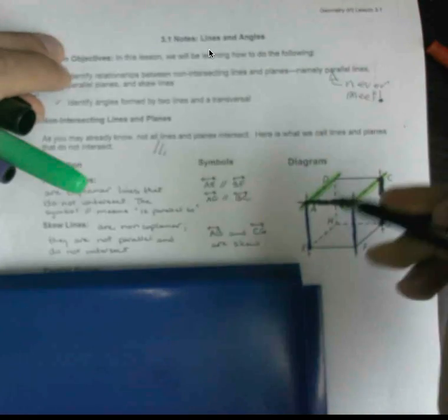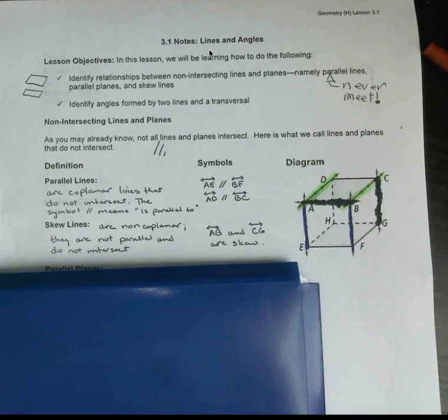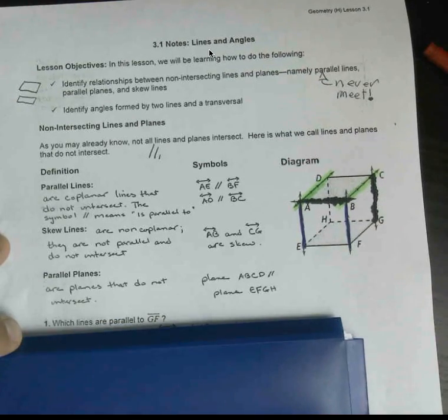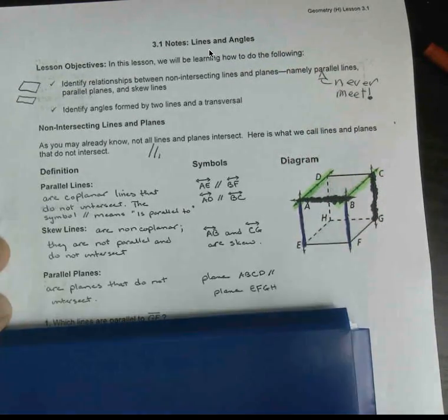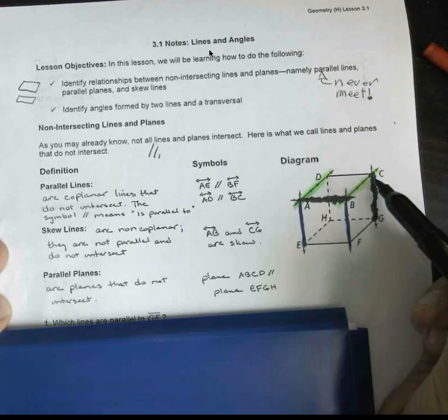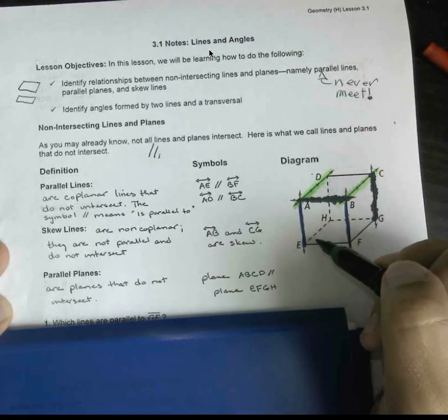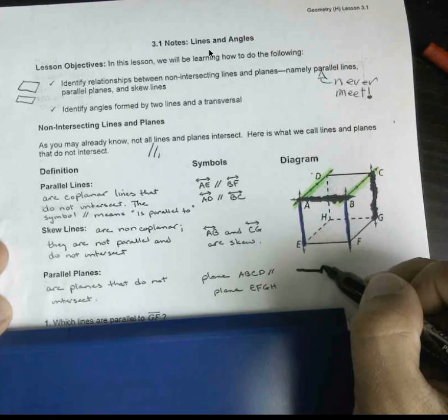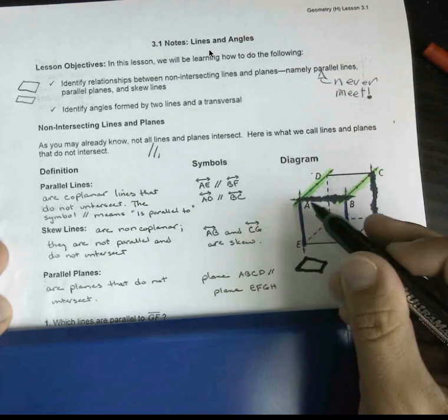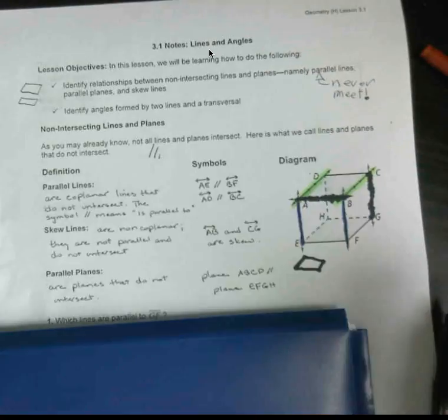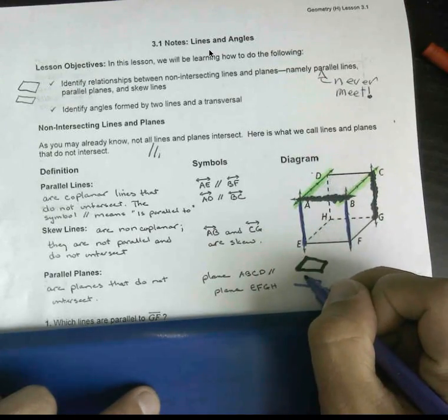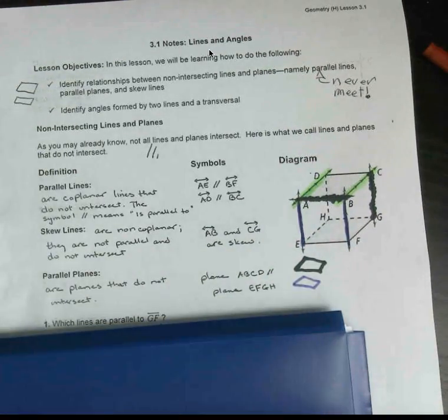Parallel planes do not intersect. This makes sense because plane ABCD is higher up and EFGH is below it. Similar to the sandwich example, this is ABCD and let's use purple for EFGH. So these kind of hover over each other.